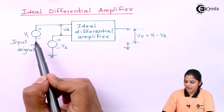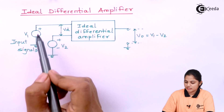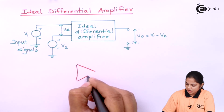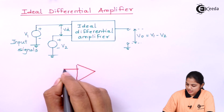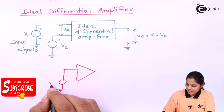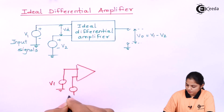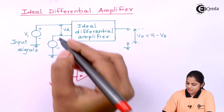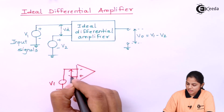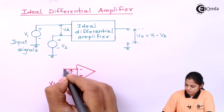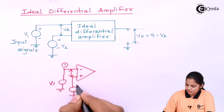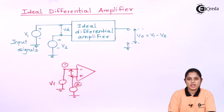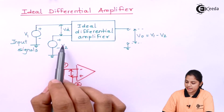Looking at the simple block diagram, you have one input given as V1 — basically you have an op-amp where one input is connected as V1 and the second input is connected to V2. This can be negative or positive and vice versa. Vd is nothing but the difference between these two inputs. If you name them terminal 1 and terminal 2, Vd is the difference between the voltage potential of terminal 1 and terminal 2.